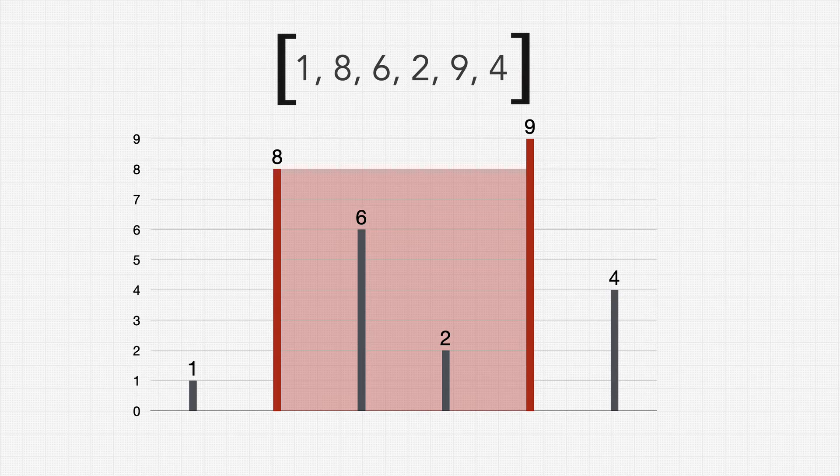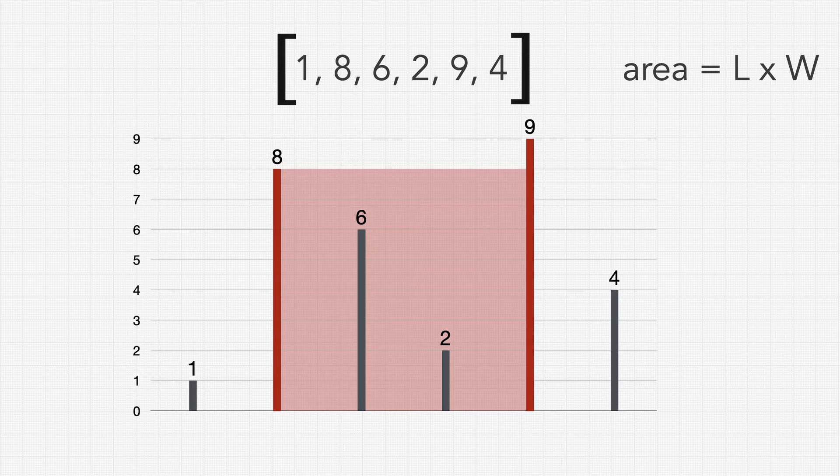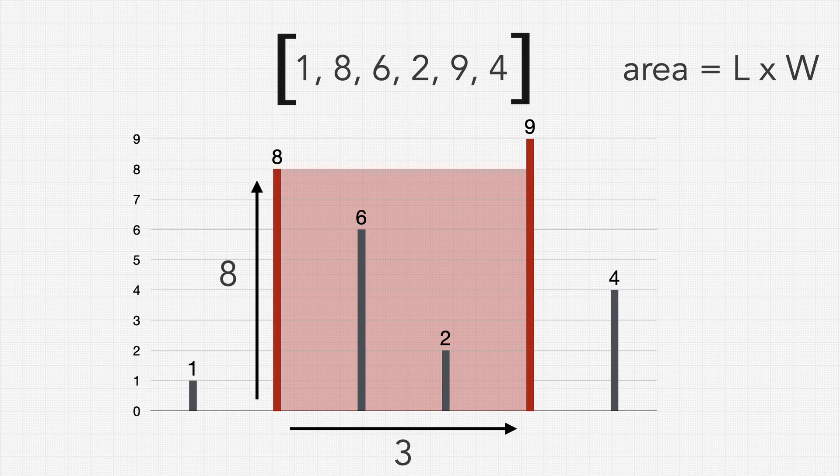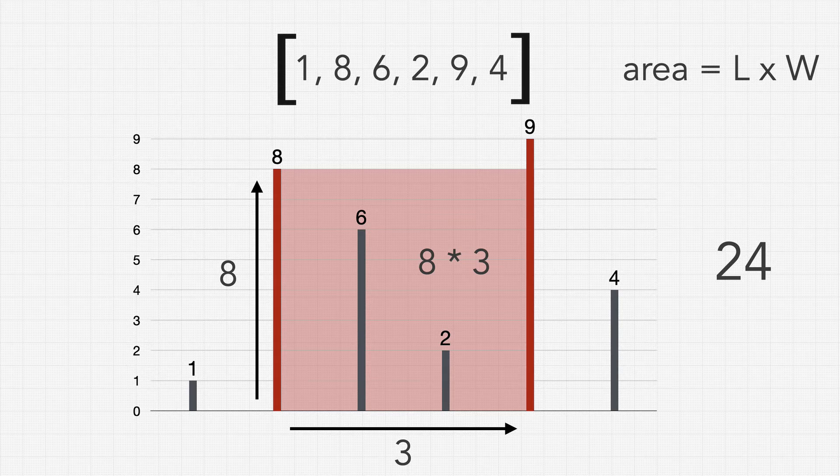So what we need to do is return the area that this container holds when it comes to the water and as we know area is calculated using length times width. In this case the length would be the height of our container which is the smaller of the two sides so the 8 and the width is the distance between our two lines on the x-axis which is 3. This gives us an area calculation of 8 times 3 which yields an area of 24.